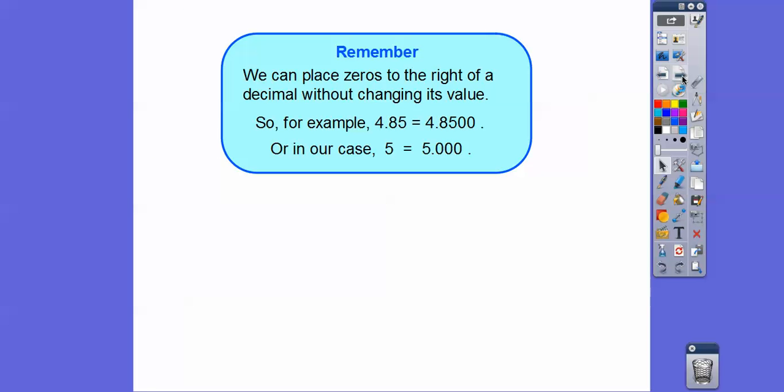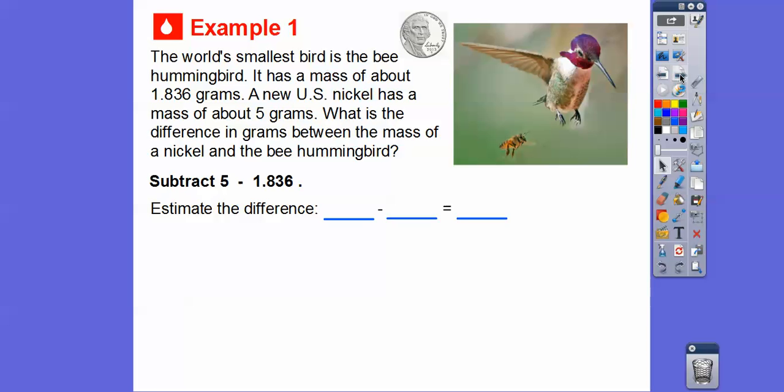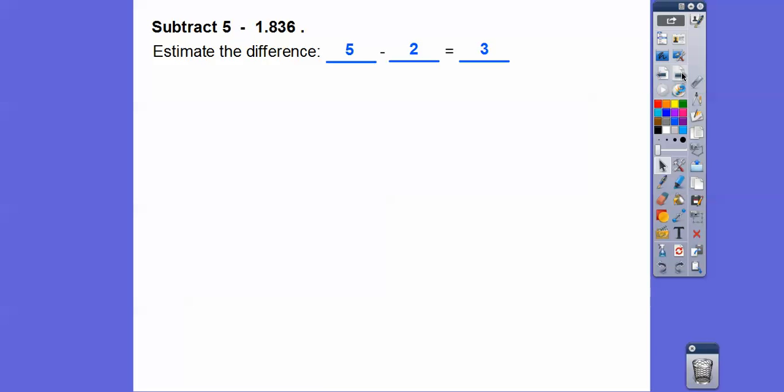So remember, we can place zeros to the right of a decimal without changing its value. So 4.85 is the same as 4.8500. Or in our case, we're going to change 5 to 5.000, so we can subtract. So let's estimate. I'm going to round this to 5, and this is close to 2. So 5 minus 2 is going to give us something that's close to 3. So let's add those zeros in there.